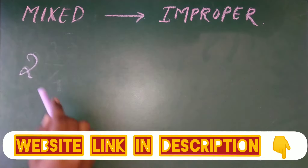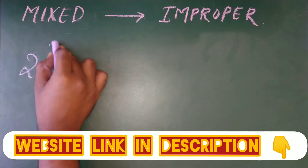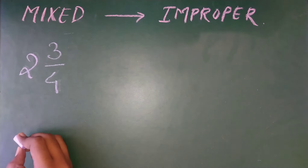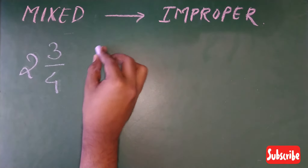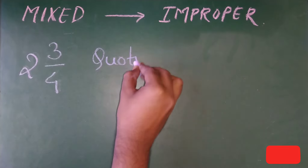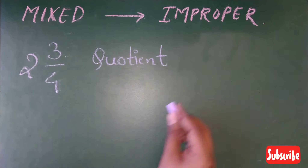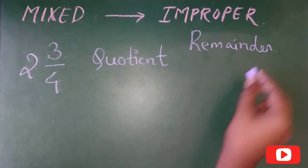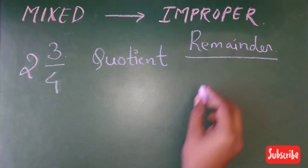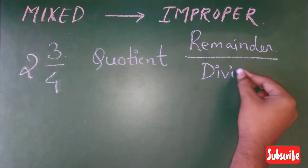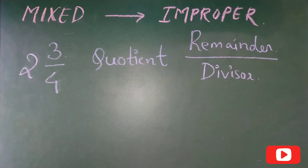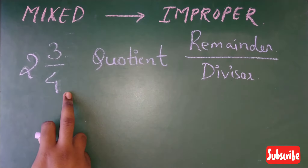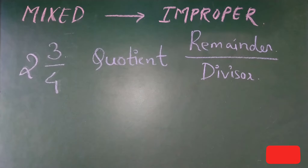For example, take 2 and 3/4 — this is a mixed fraction. Here, 2 is the quotient, 3 is the remainder, and 4 is the divisor. So it basically represents the division part.